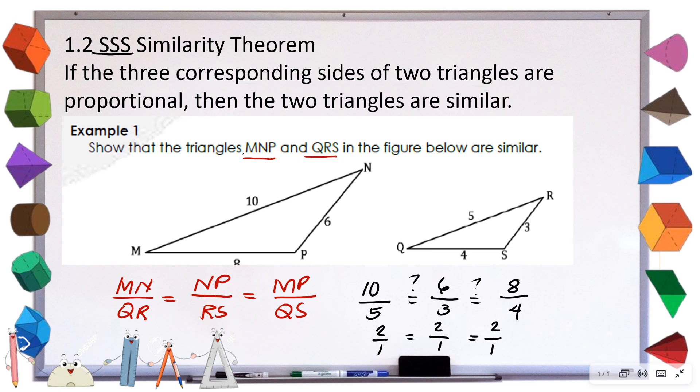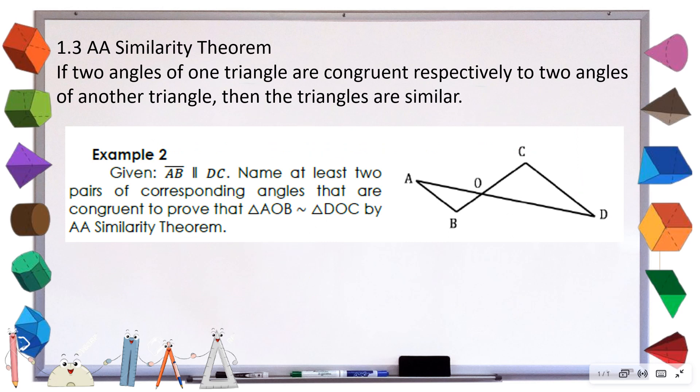Let's proceed to the third, which is the AA similarity theorem. This theorem states that if two angles of one triangle are congruent respectively to two angles of another triangle, then the triangles are similar. We don't need to find the third angle because the sum of interior angles of any triangle is 180 degrees — if two angles are congruent, the third angle is already congruent.